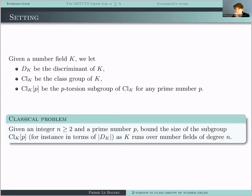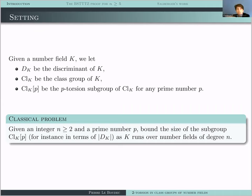Here is a classical problem. Given two integers N at least two and P a prime number, people are interested in bounding the size of the subgroup CL_K[P], the P-torsion subgroup of CL_K, in terms of the discriminant of K, as K runs over number fields of degree N. So the degree is fixed, the prime P is fixed, and we have constants which depend on these two integers, but we don't care about those constants.